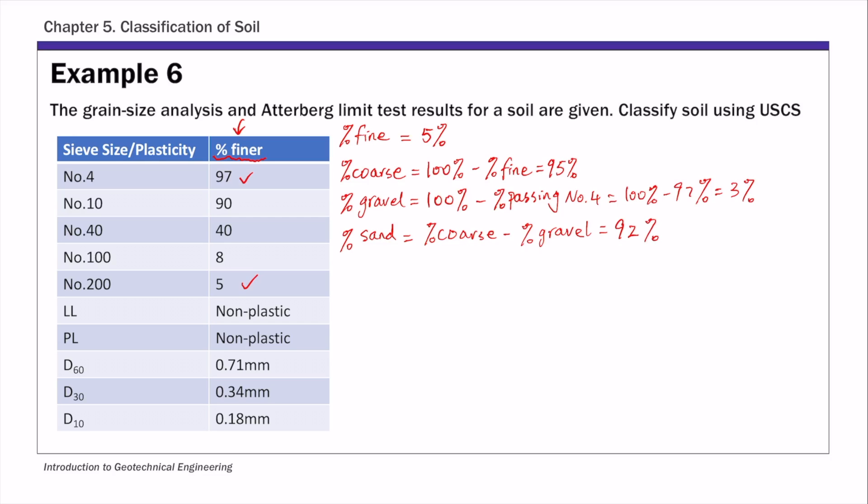We are also given these d values, which are typically read from a particle size distribution curve. Since we are given these values, we can calculate the two coefficients. The coefficient of uniformity, Cu, is d60 over d10. So if we plug in these values, d60 is 0.71 and d10 is 0.18, so that's 3.9.